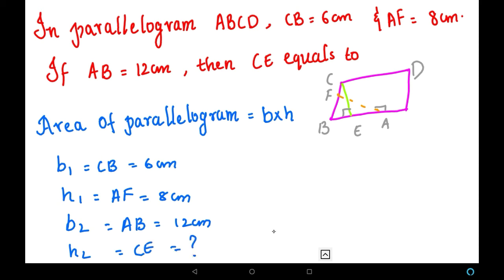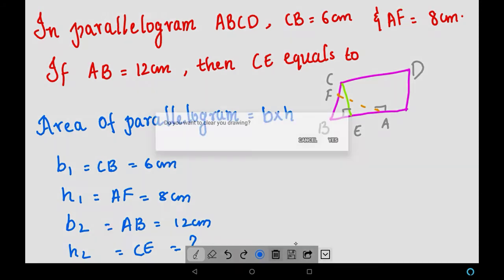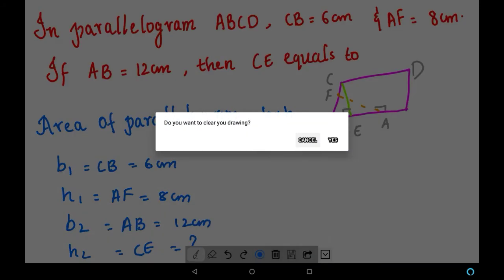Now let us do it in a fresh page. Now what we are going to do is, we have segregated the values in variable form. Now let us write it here. Let us equate them both: that is B1 H1 equals B2 H2.